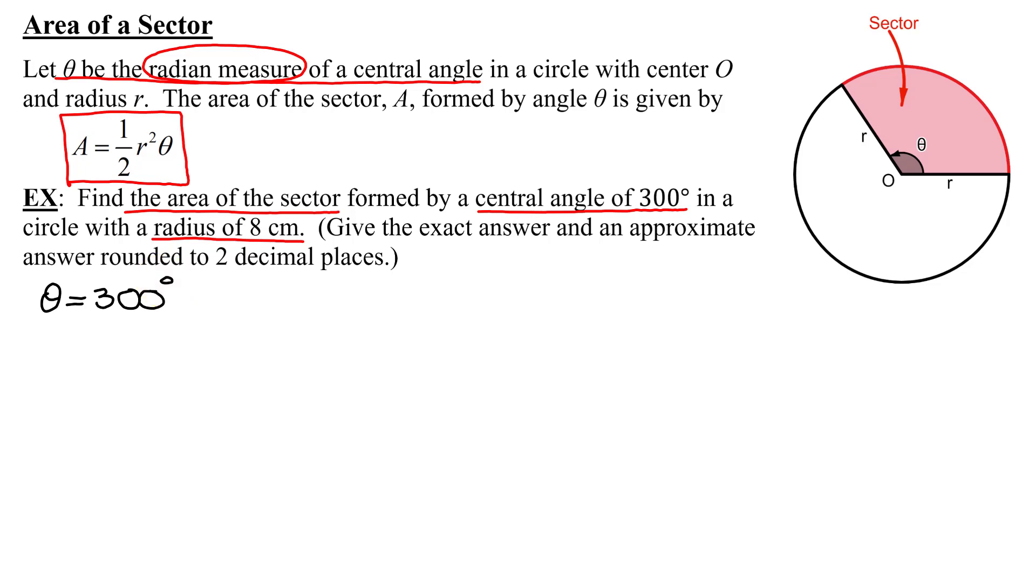Hopefully you remember the conversion factor from degrees to radians, that 180 degrees equals pi radians. So I'm going to take my 300 degrees, I want to turn it into a fraction by dividing it by 1,